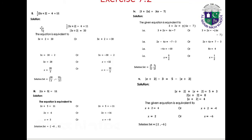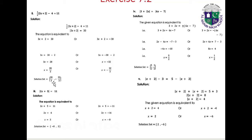Part 2: (1/2)|3x plus 2| minus 4 equals 11. So (1/2)|3x plus 2| equals 15, giving |3x plus 2| equals 30. This is equivalent to 3x plus 2 equals 30 or 3x plus 2 equals minus 30. First gives 3x equals 28, so x equals 28/3. Second gives 3x equals minus 32, so x equals minus 32/3. Solution set: {28/3, -32/3}.